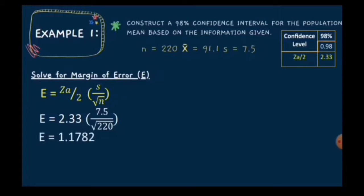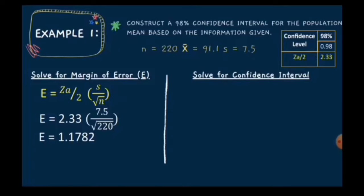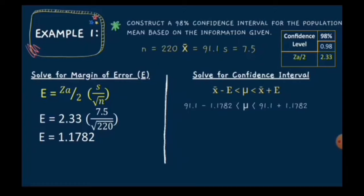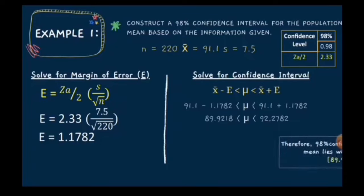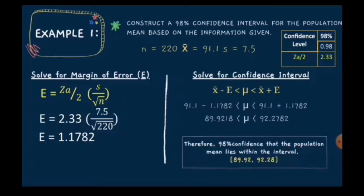Then to solve the confidence interval: for the lower limit, that's the sample mean minus the margin of error — 91.1 minus 1.1782 — and for the upper limit, 91.1 plus 1.1782. The lower limit is 89.9218 and the upper limit is 92.2782. Therefore, we are 98% confident that the population mean lies between 89.92 and 92.28.